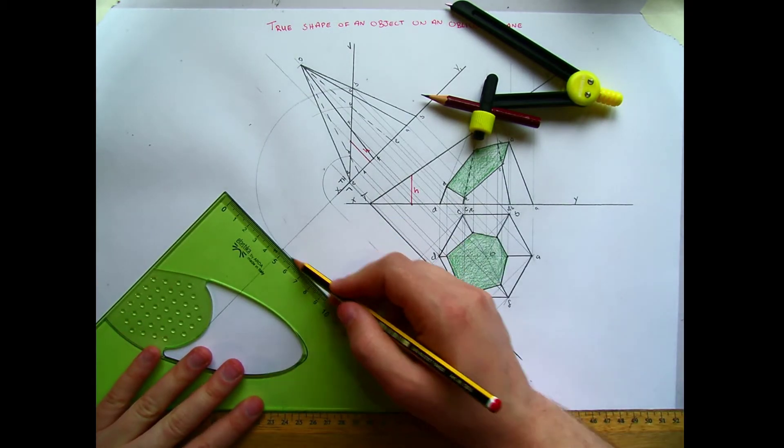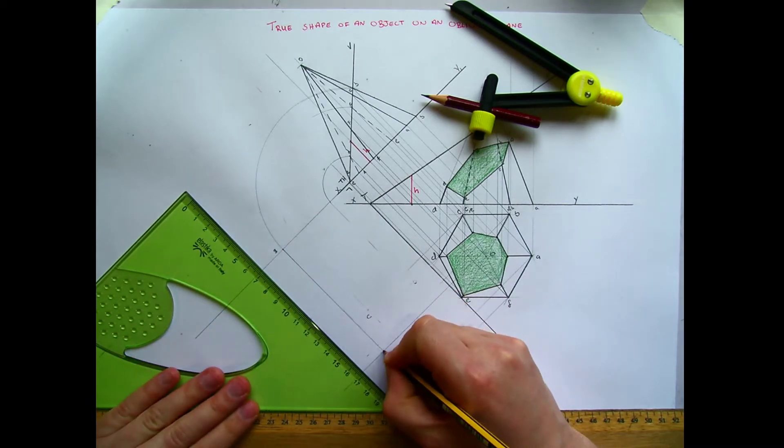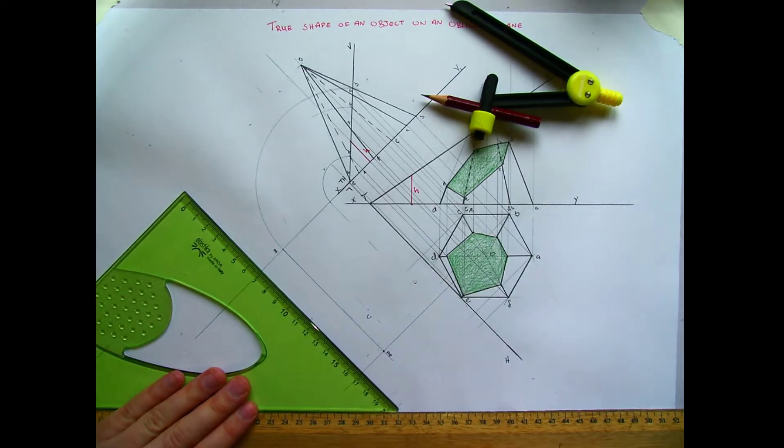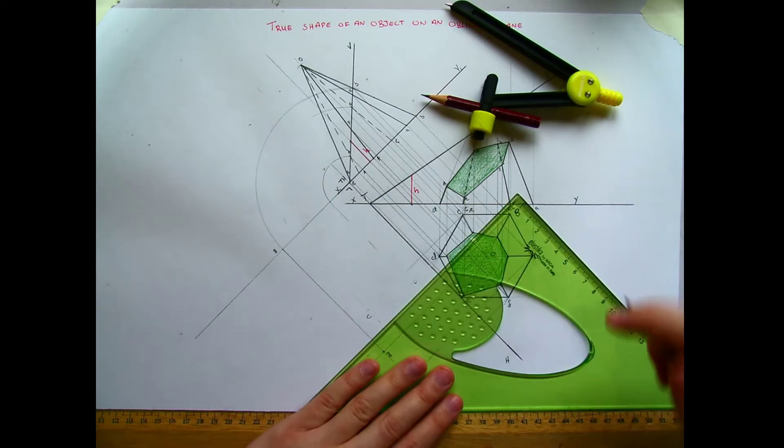So I'm going to take this distance and project it down along until it intersects with the line that I brought out from b. So this is b. This is the new point b. That's a point on the true shape. I'm going to do the same thing now again for my other point.